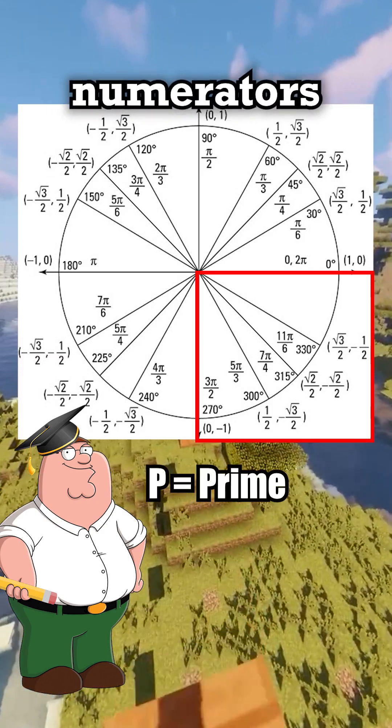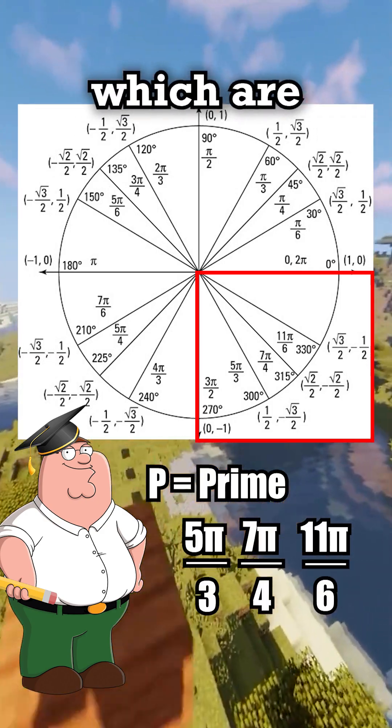P means prime, because the fourth quadrant numerators use 5, 7, and 11, which are all prime numbers.